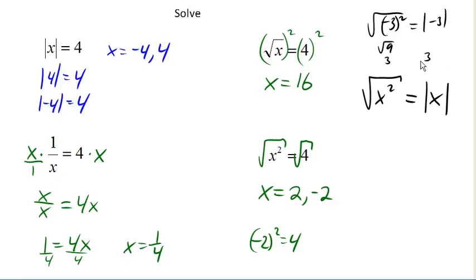So the way that this helps us is that I can treat this problem now as the square root of x squared is absolute value of x. The square root of 4 is 2.